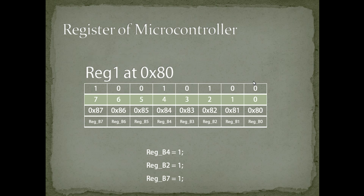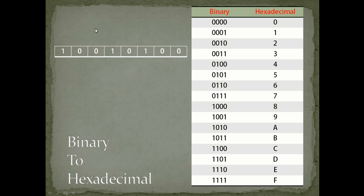So we move to Method 2, where you write a full byte value to the register. Taking the same example — making bits 4, 2, and 7 equal to 1 and the rest 0 — we write 1 byte of hexadecimal data to address 0x80. The register reg1 is at 0x80, so we write the 8-bit binary value 10010100 to that address.